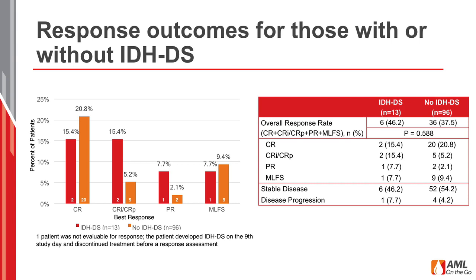This slide provides data on response outcomes for patients with or without IDHDS. The overall response rate for individuals who had IDHDS — including complete remissions, partial responses, and morphologic leukemia-free states — was 46%, compared to 37.5% for those without identified IDH differentiation syndrome. There was no significant difference in overall response rate; however, it is important to note the very small sample size of 13 patients with IDHDS and 96 without. Additional study is needed to determine whether patients who developed IDHDS ultimately have different rates of response to enasidenib.